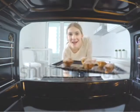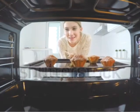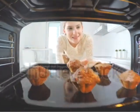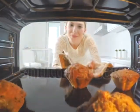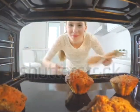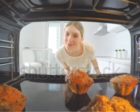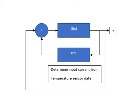This toaster oven is a discrete system in which power is either flowing or not flowing. The inputs of the system are the current flowing through the heating element, and the outputs are the measured temperature within the heating chamber.